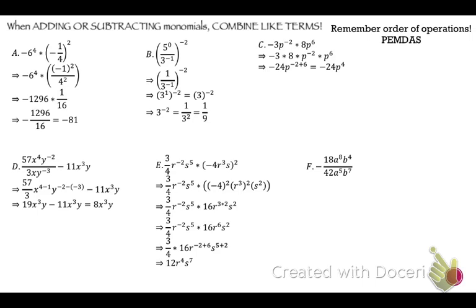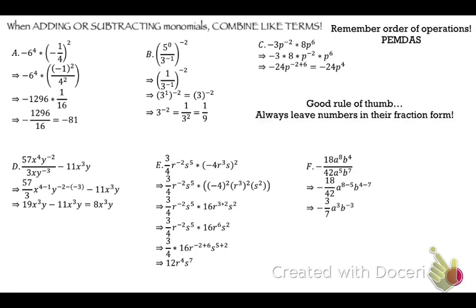Let's do this last one. That's negative 18 over 42, a to the 8 minus 5 (because it's dividing), b to the 4 minus 7. Negative 18 over 42 reduces to negative 3/7 — leave it in fraction form. We have a negative exponent on b, so drop that down to the bottom. That gives us negative 3a cubed over 7b cubed.